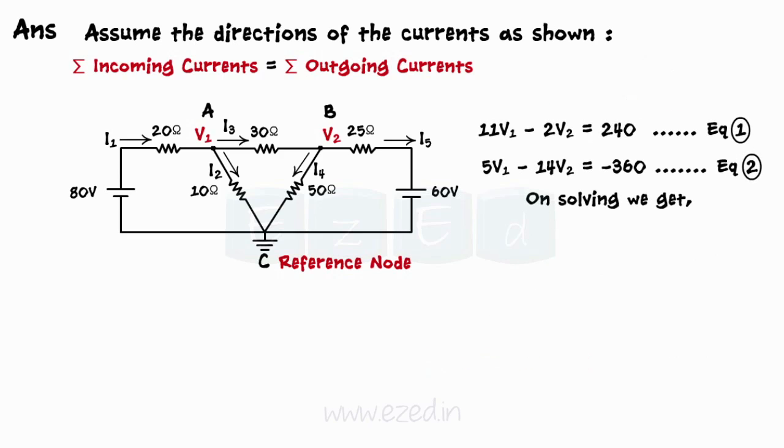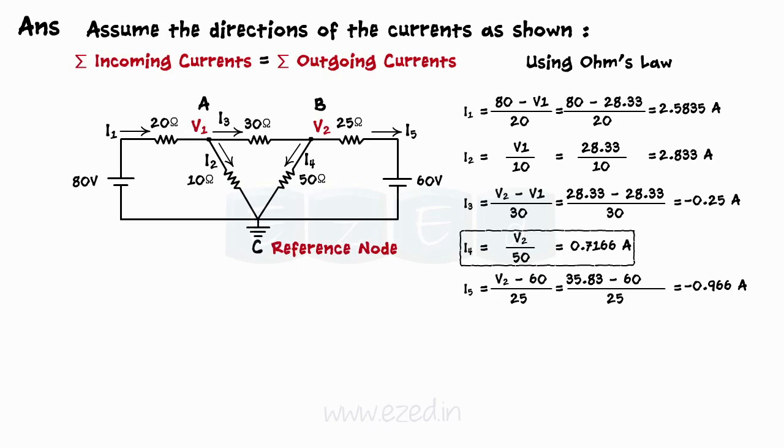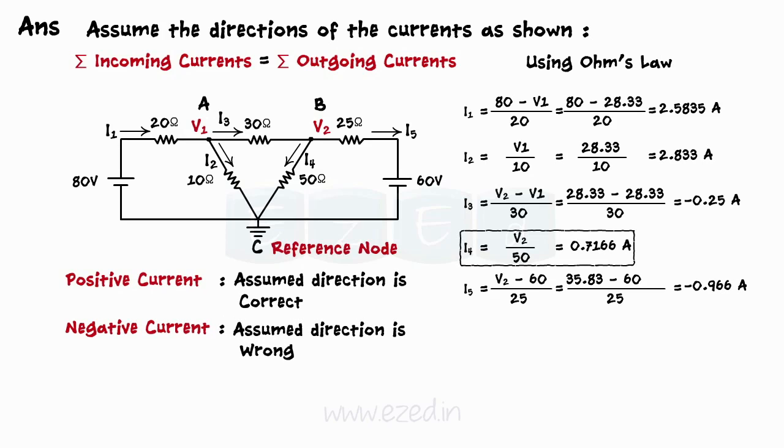On solving the two equations, V1 equals 28.33 volts, V2 equals 35.83 volts. Thus, using Ohm's law, we can now find the current flowing through every branch. If it comes out as positive, our assumed direction is correct. But if we get a negative value, means the current flows in the opposite of assumed direction.